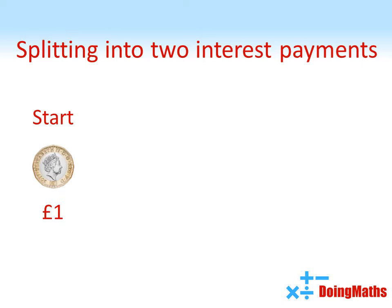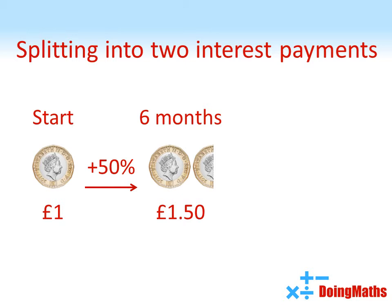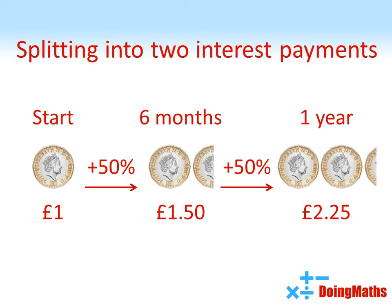Now suppose instead of getting that hundred percent at the end of the year, it gets split up into two fifty percent payments — one after six months, one after twelve months — and you get compound interest. That means you get interest on any interest that you've earned earlier. So you start off with your pound, six months in you get fifty percent added on, so fifty percent of a pound is fifty P, so after six months you've got one pound fifty. After twelve months you get fifty percent interest again, but this time you're getting fifty percent of one pound fifty, which is seventy five P, so you end the year with two pound twenty five. So although the two payments still add up to a hundred percent, we're actually ending up with more money than we would have got with the one-off payment.